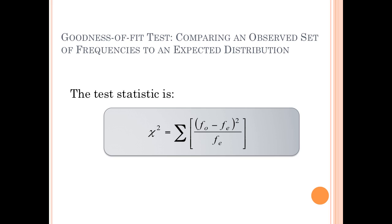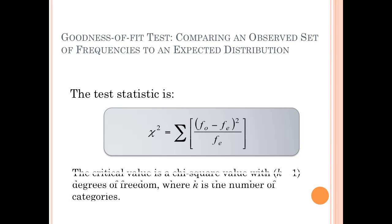For each category, you take your observed minus your expected, square that difference, divide it by the expected, and then sum all of those values across every category. Your degrees of freedom are based on the number of categories k, and your df is k minus one.